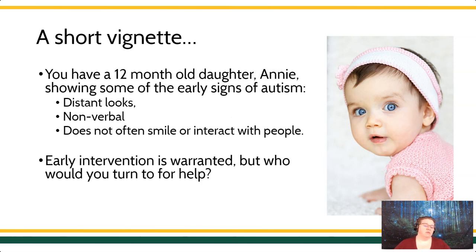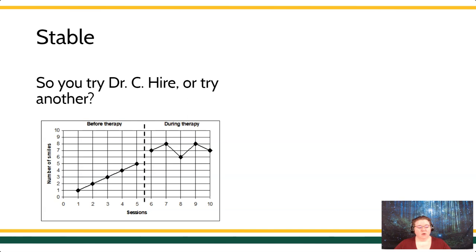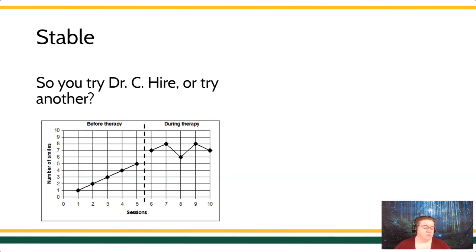Let's talk about what that would mean in terms of stability. For Dr. C, this is the treatment effect that they've produced. We see a baseline condition. On the y-axis, the left axis, that's our dependent measure — the number of smiles. On the x-axis, the bottom horizontal axis, it tells us we're looking at the number of smiles across time or sessions. In the baseline condition, we start with one smile, two smiles, three smiles, four smiles, and then five smiles.